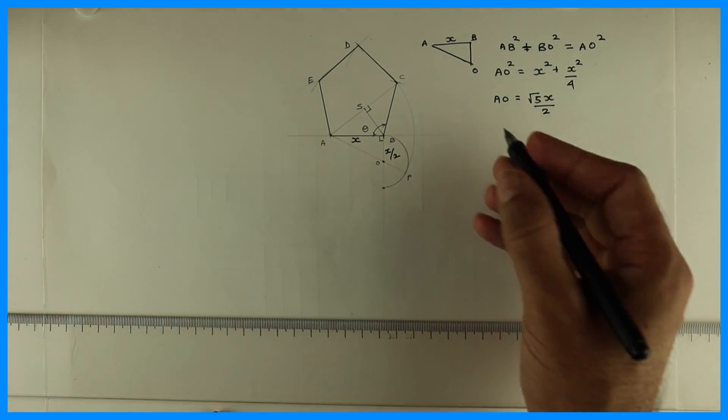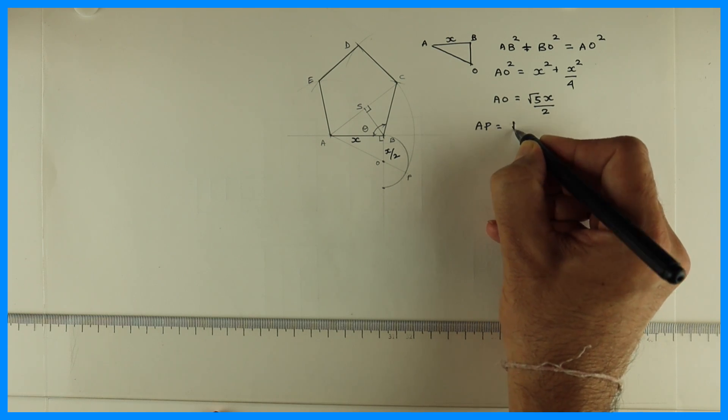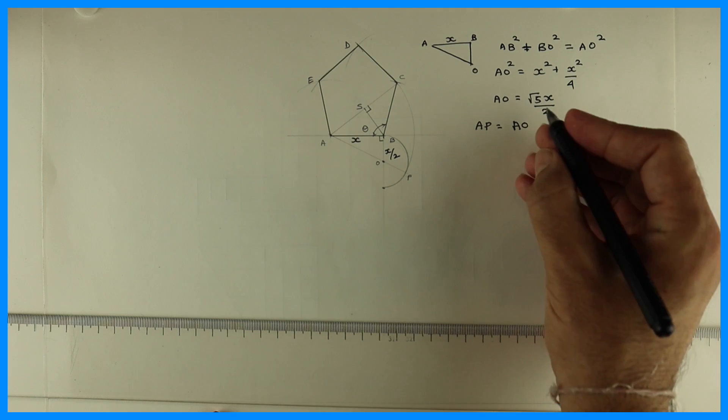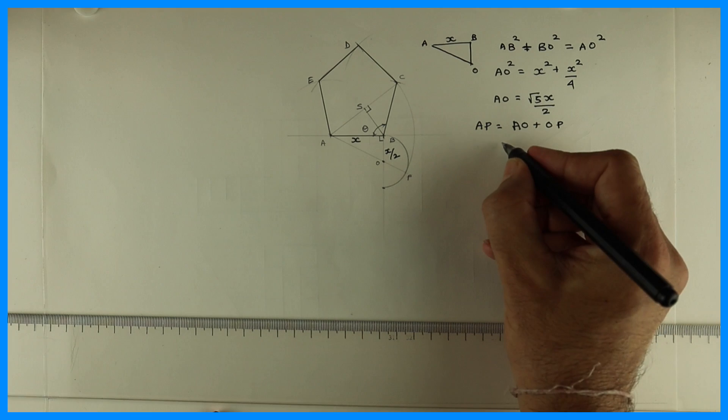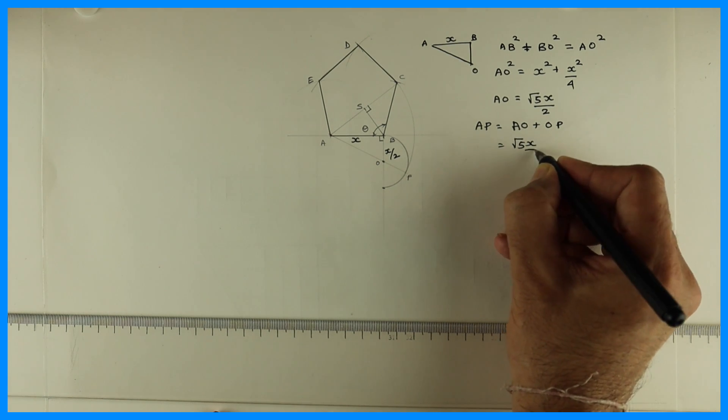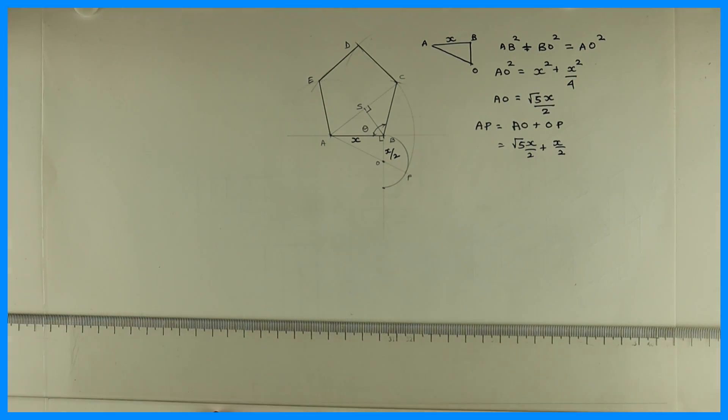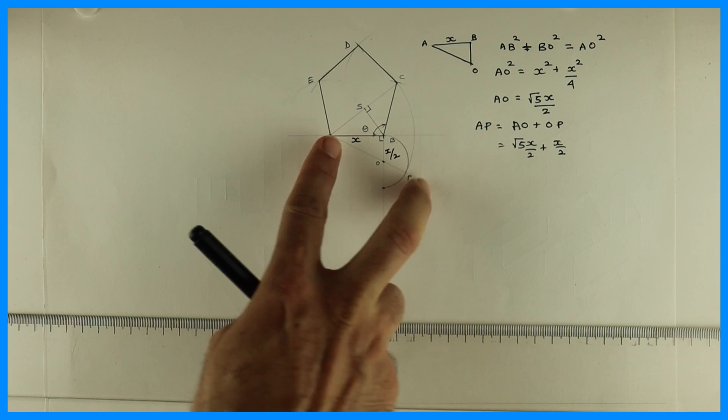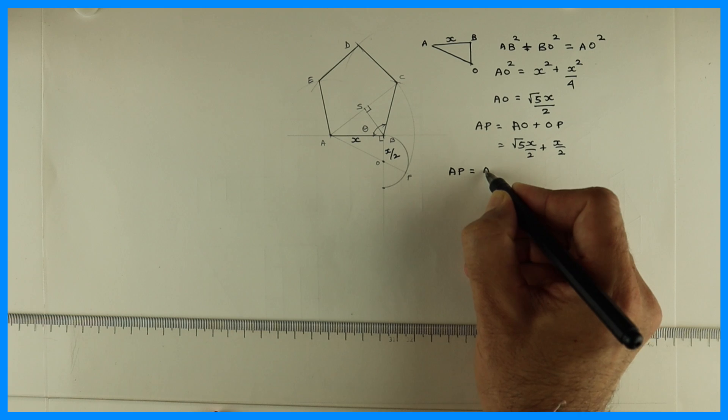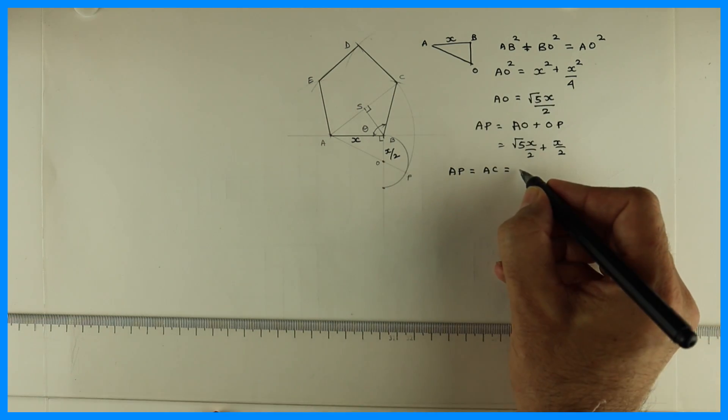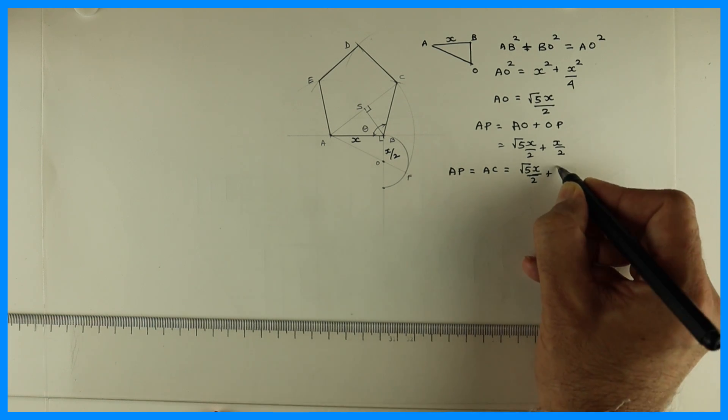So what is the value of AP? AP is equal to AO plus OP. So AO plus OP we need to find out. AO is under root 5 X by 2. OP is X by 2. Now AP is equal to AC. Now AP is equal to AC, which is under root 5 X by 2 plus X by 2.